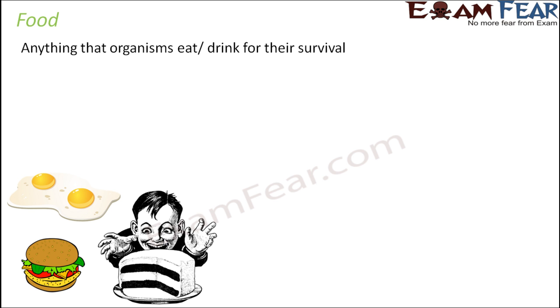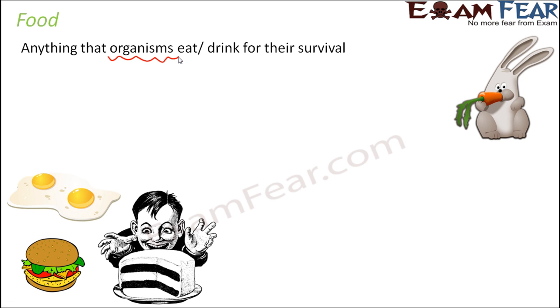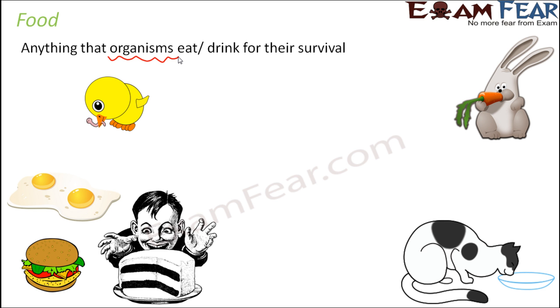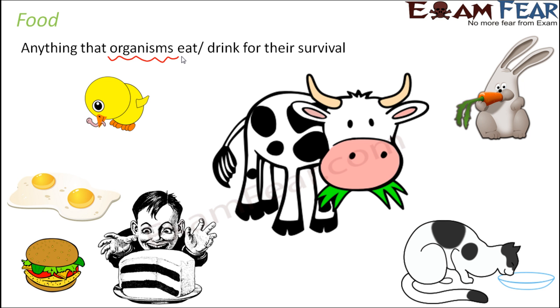Food is a very common term for each one of us. We eat food to survive. How would you define food? It would be anything that organisms eat or drink for their survival. These organisms could be human beings or other animals — rabbit, cat, birds, cows. Every living organism needs food. So whatever we eat or drink, whether it is pizza, burger, rice, or cold drink, everything falls under the category of food.